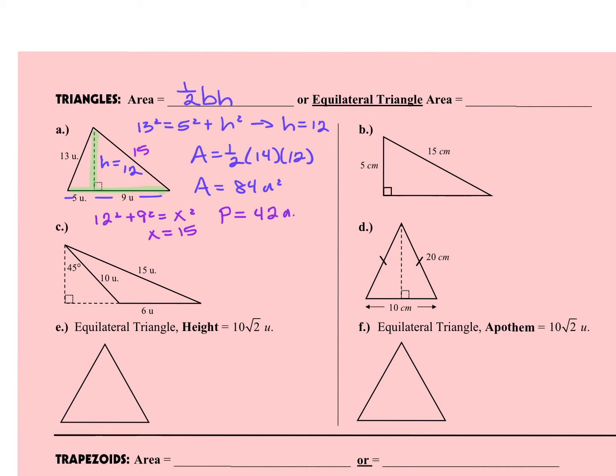Don't get in your head that the relationship between area and perimeter is always going to be half — that's just a coincidence on this particular problem. Just know that you would actually have to work all the way through the triangle to get all the pieces.